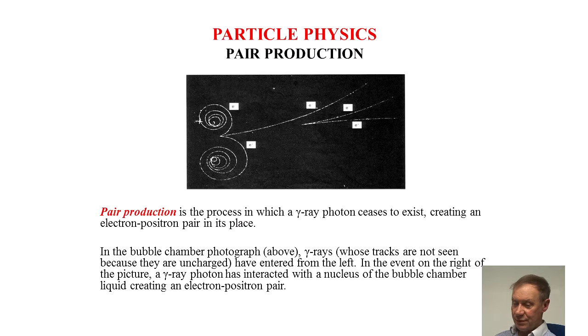In the bubble chamber photograph shown, gamma rays tracks are not seen because they are uncharged, have entered from the left.